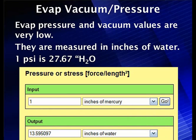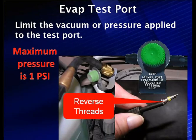Using a standard vacuum gauge is useless here. We'll show you how to use scan data and other things when we get into more sophisticated systems. The test port allows only 1 PSI maximum regulated pressure. Notice there are reverse threads on the Schrader valve — don't damage it when you take it out. You'll need to remove it and hook up your smoke machine and other equipment for testing.